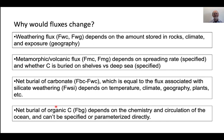Why would the fluxes change? The fluxes depend on the amount stored in the rocks — those are the reservoir sizes — the climate, and the exposure, which is the geography. If there's more land exposed, you could weather more carbonates and put more CO2 into the atmosphere faster. The metamorphic and volcanic flux depends on the spreading rate, and they have a spreading rate that they've specified, which defines the changes in metamorphic and volcanic flux through time. There's also a question of whether carbon is buried on the shelves versus the deep sea, which defines how much carbon goes into subduction zones for degassing.